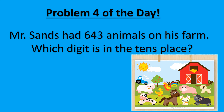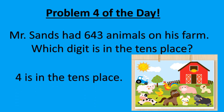Problem four of the day brings us to Mr. Sands' farm. Mr. Sands had six hundred forty-three animals on his farm. Which digit is in the tens place? That's right, boys and girls — the digit four is in the tens place.